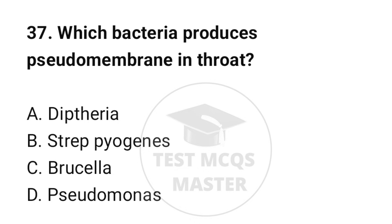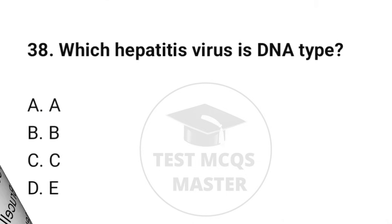Question number 37: Which bacteria produces pseudomembrane in the throat? The correct option is A: Diphtheria. Question number 38: Which hepatitis virus is DNA type? The correct option is B: Hepatitis B.